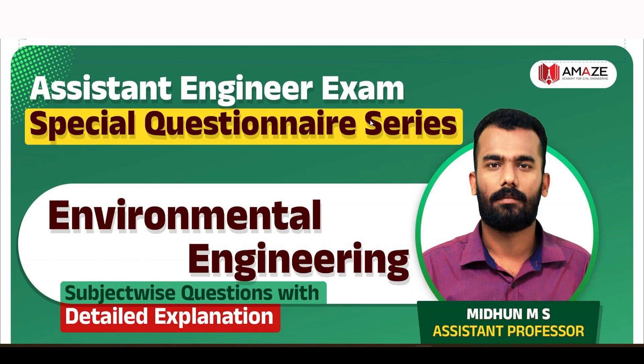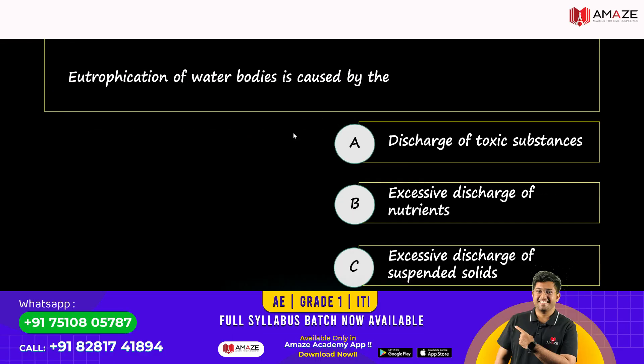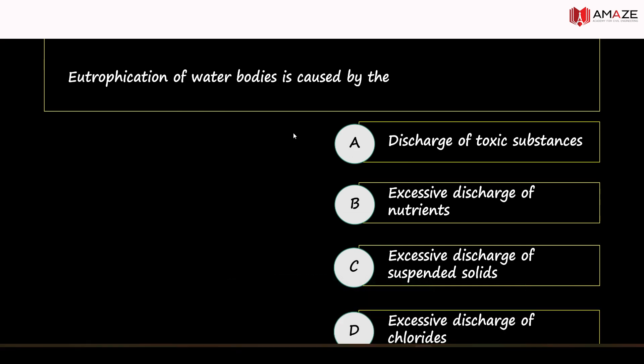We have to learn some new questions about environmental engineering. We have to learn some questions about eutrophication of water bodies. The options are: caused by discharge of toxic substances, excessive discharge of nutrients, excessive discharge of suspended solids, or excessive discharge of chlorides.